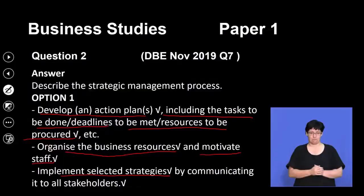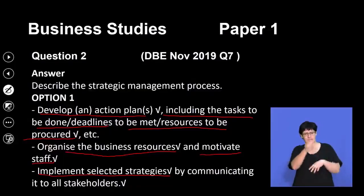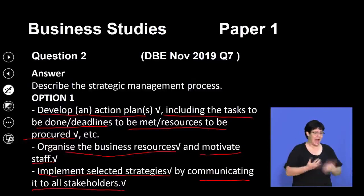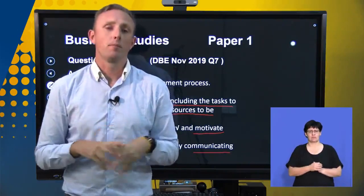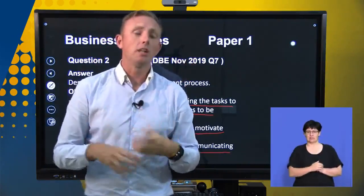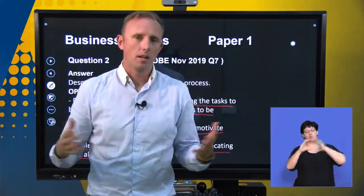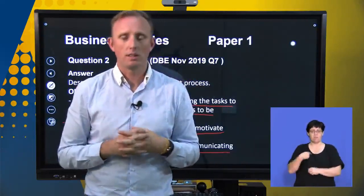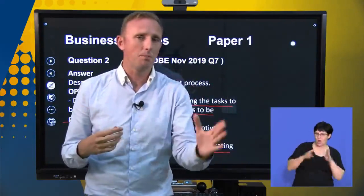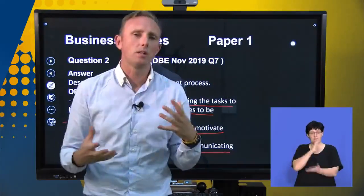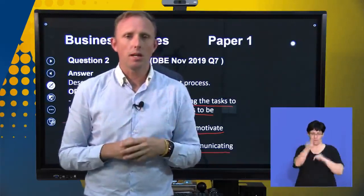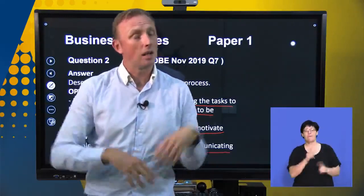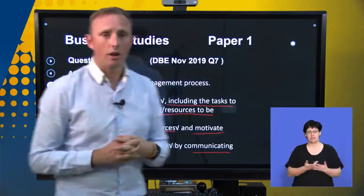We have to implement the selected strategies by communicating them to all stakeholders. If we look at the government's lockdown strategy, President Cyril Ramaphosa came out and communicated to the whole country what was happening in terms of the lockdown. When we implement a strategy, we need to make sure all stakeholders are aware — otherwise we're going to have miscommunication that can lead to mistrust, which is going to hamper our strategy going forward.